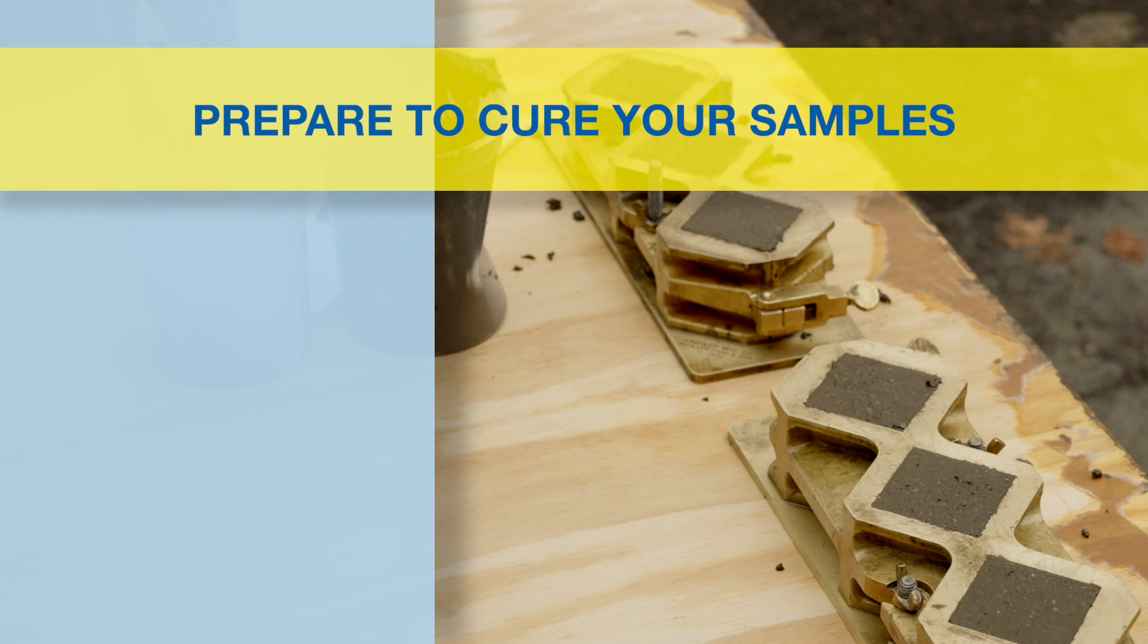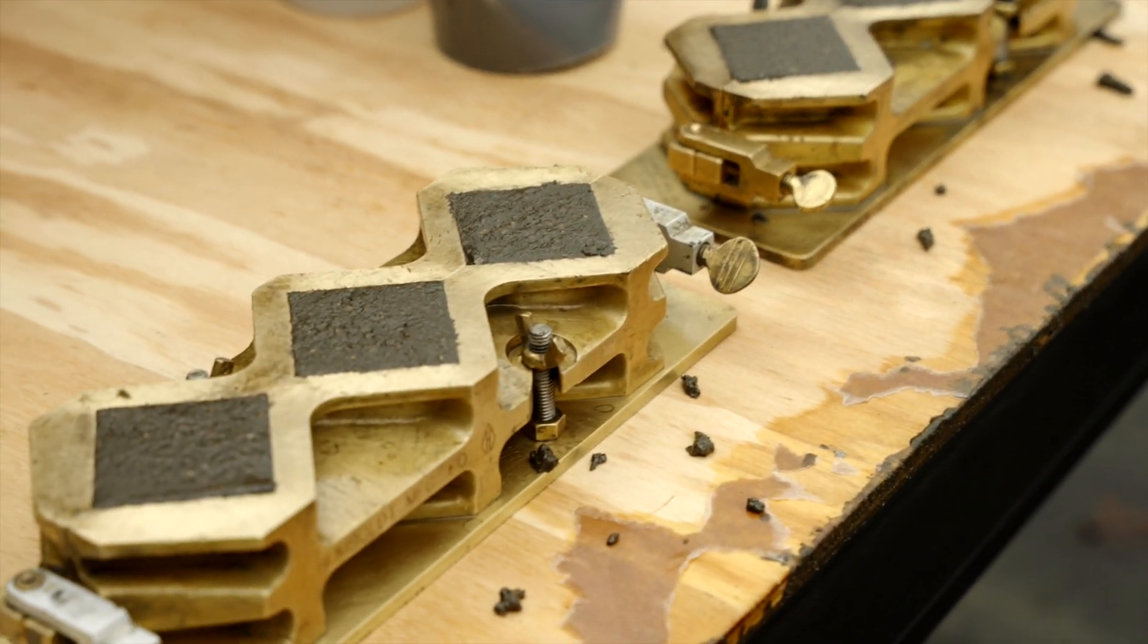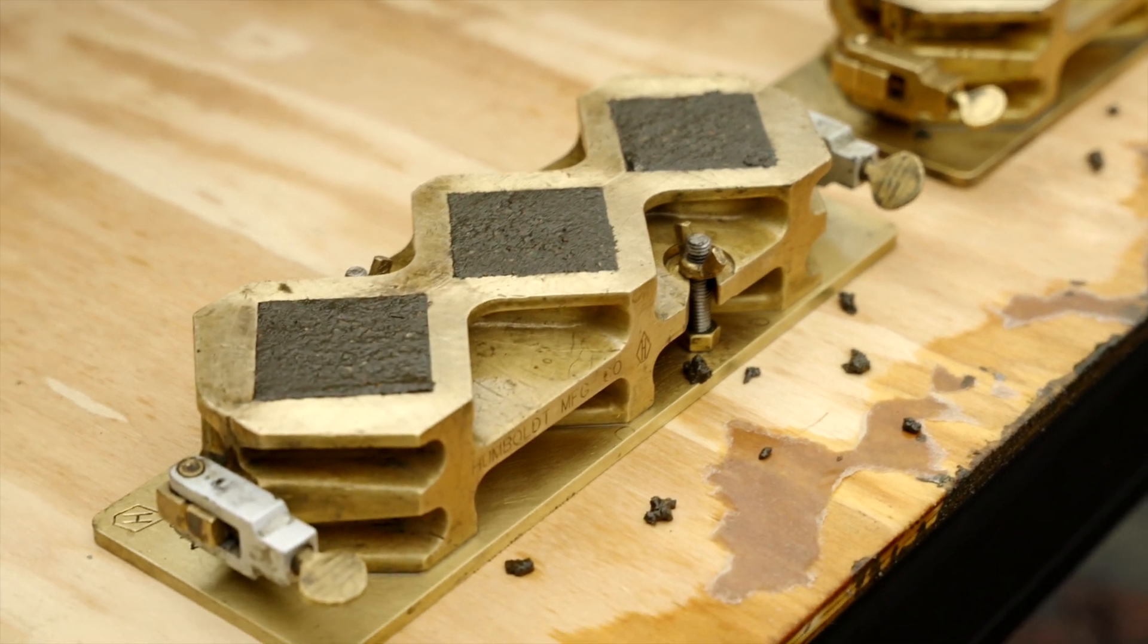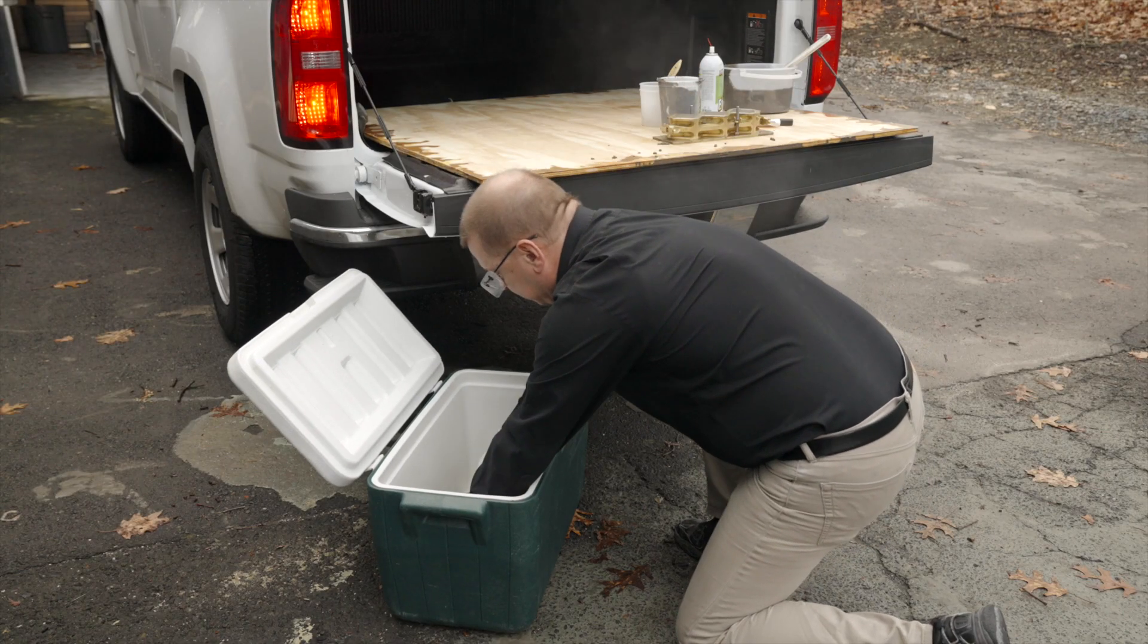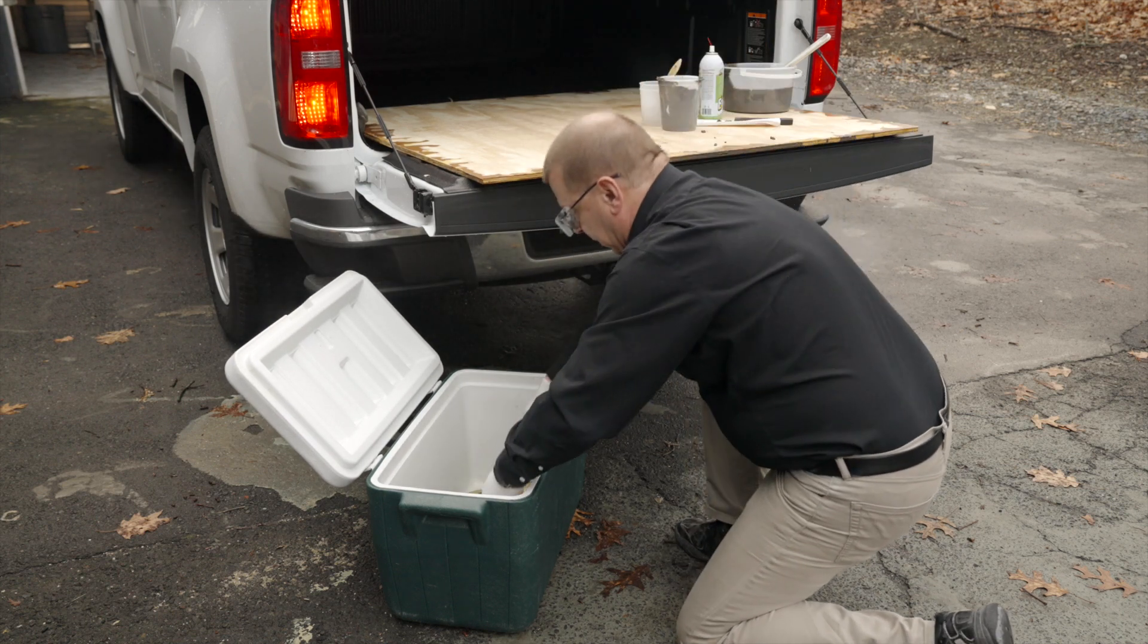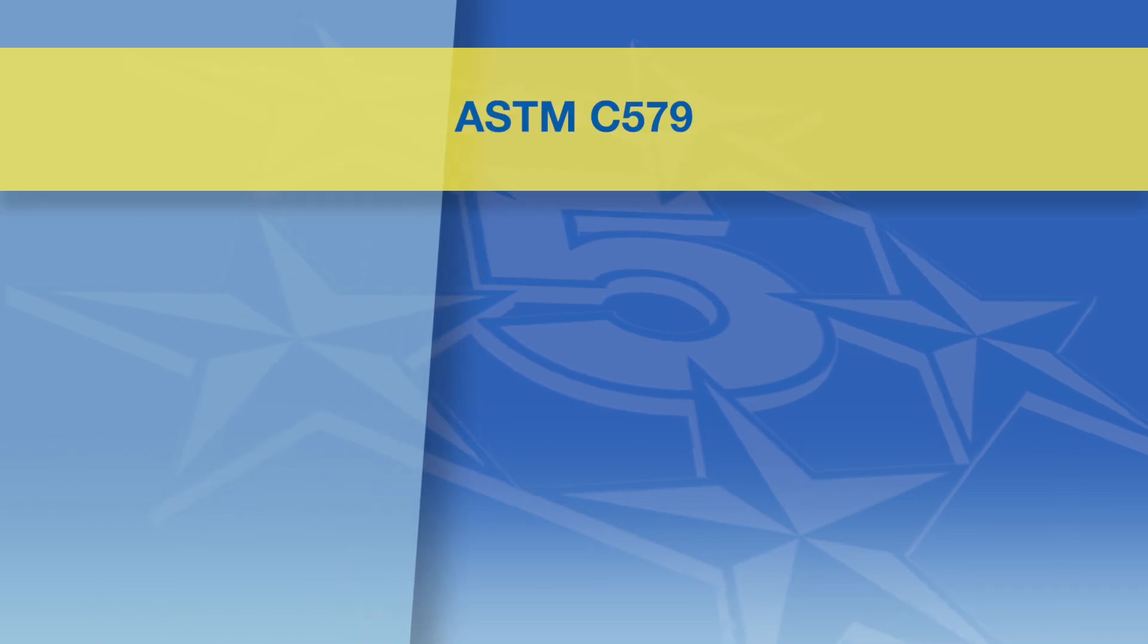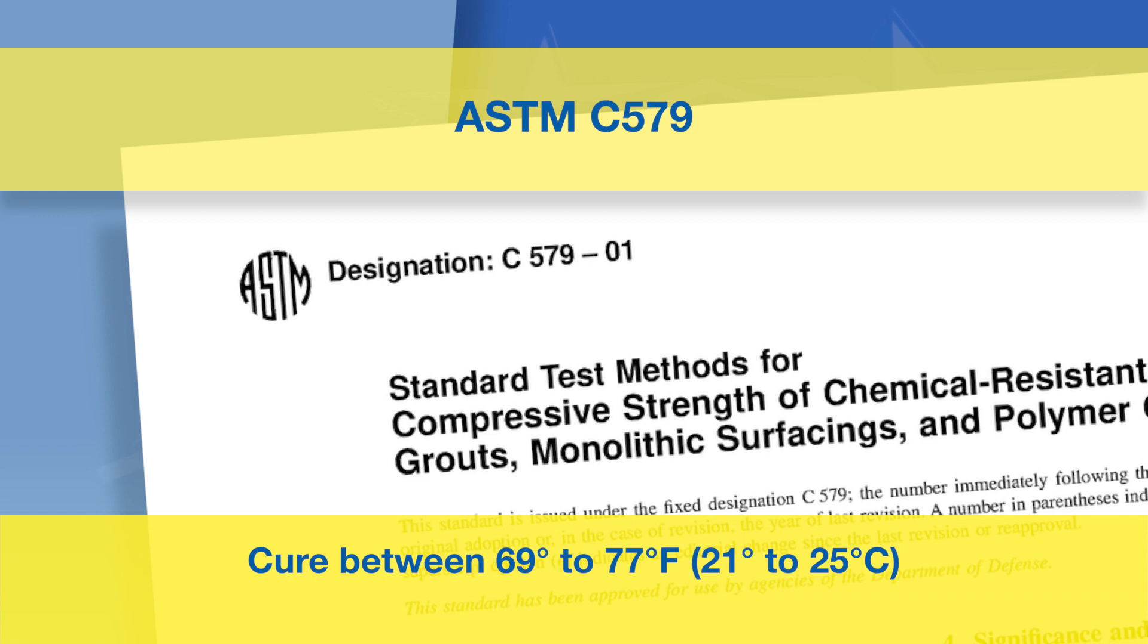Your sample's curing location will be either the field or the lab. If curing under approximate field conditions, note the temperature when the sample is taken and store the samples in a cooler or insulated box until the initial set of the design strength is achieved, or as otherwise specified. If curing in the lab to develop a measurement comparable to a published technical data sheet strength, samples should be cured under temperature conditions prescribed by the ASTM C579, which is 69 degrees to 77 degrees Fahrenheit.